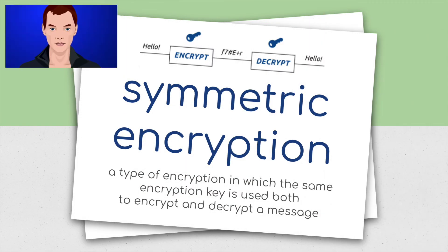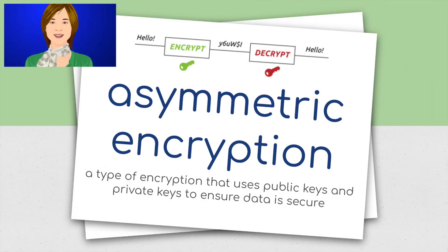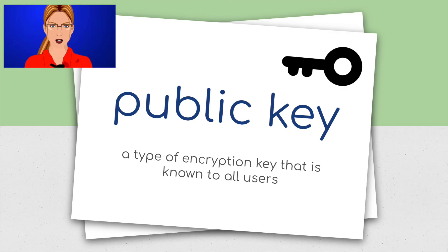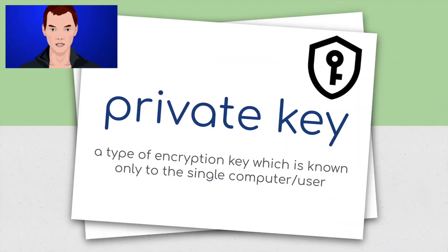Symmetric encryption: a type of encryption in which the same encryption key is used both to encrypt and decrypt a message. Asymmetric encryption: a type of encryption that uses public keys and private keys to ensure data is secure. Public key: a type of encryption key that is known to all users. Private key: a type of encryption key which is known only to the single computer or user.